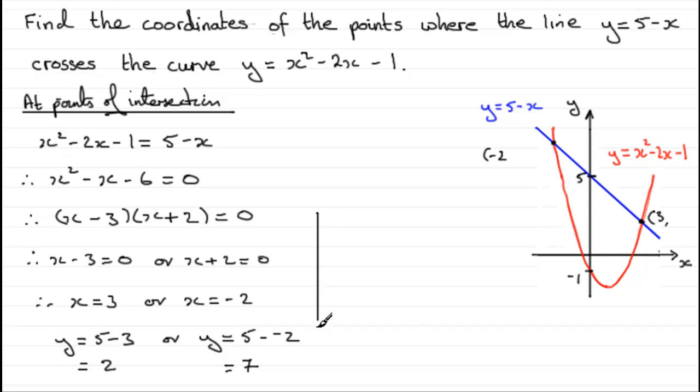So what we've got in summary then is that the points of intersection, just to wrap up the question, are, well, we've got 3, 2 and minus 2, 7. Minus 2, 7. Let's put those y-coordinates on. We've got 3, 2 and minus 2, 7.